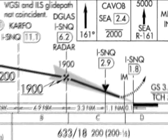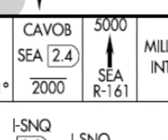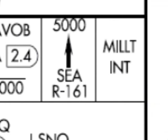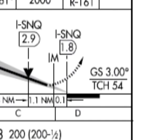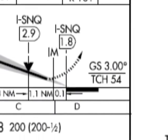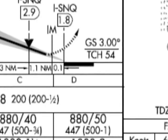Missed approach instructions explain what steps are necessary in order to execute the missed approach, detailing turning and climbing directions as well. The missed approach point is a location during the approach path that requires a positive visual identification of the runway environment in order to land. If you can't see the runway at this point while maintaining the minimum allowed altitude, you must execute a missed approach. This point is also where you can descend below the minimum descent altitude if you have identified the runway.